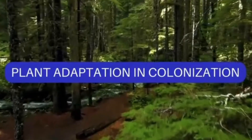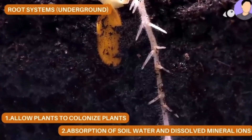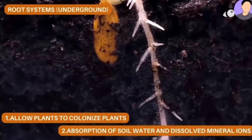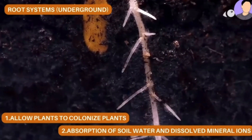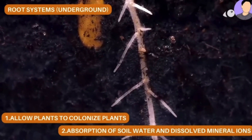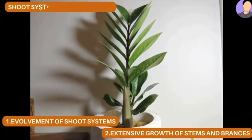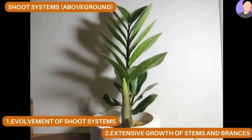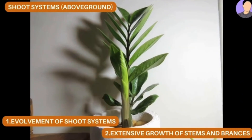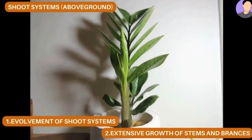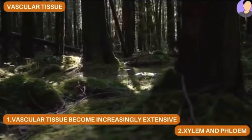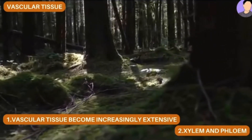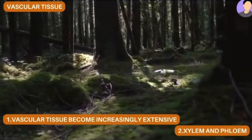Plant adaptation in colonization. The root system allows plants to colonize land, with many underground absorptive structures resulting in a large surface area for absorption of soil water and dissolved mineral ions; roots also anchor the plant. The shoot system — stems and leaves — is adapted for exploiting sunlight and absorbing carbon dioxide from air. Extensive growth of stems and branches is possible due to strengthening of cell walls by lignin deposits. Vascular tissue becomes increasingly extensive: xylem conducts water and dissolved mineral ions, and phloem conducts products of photosynthesis such as dissolved sugars.